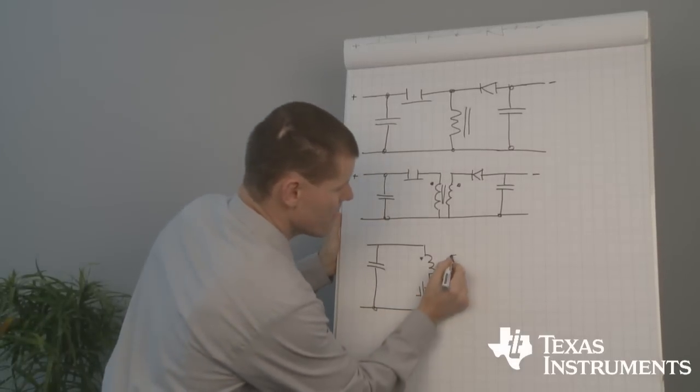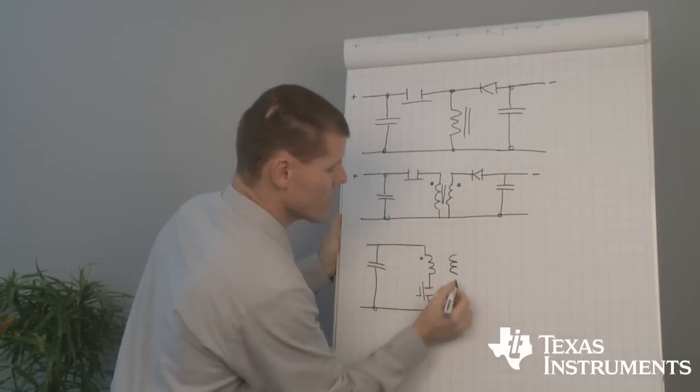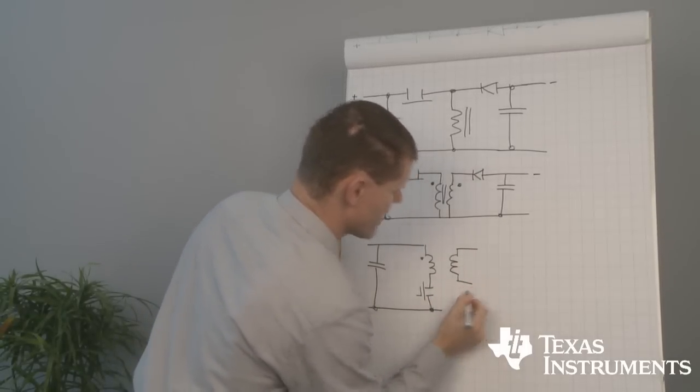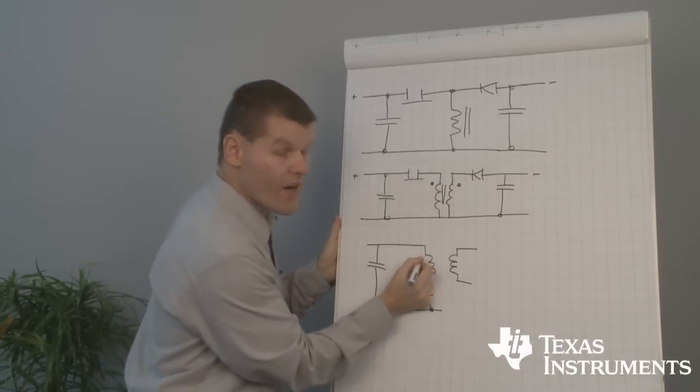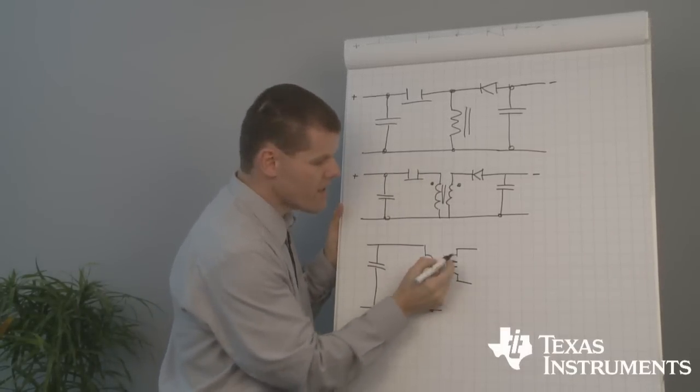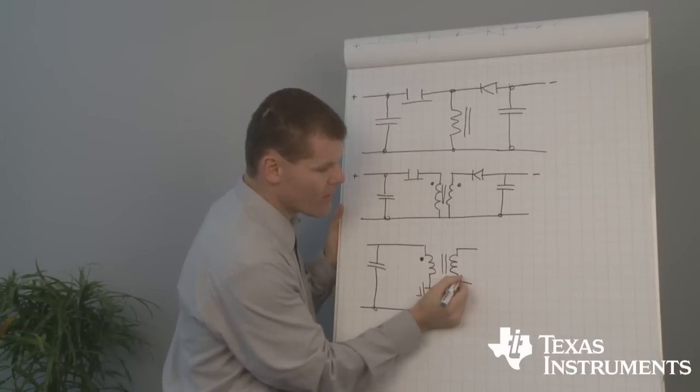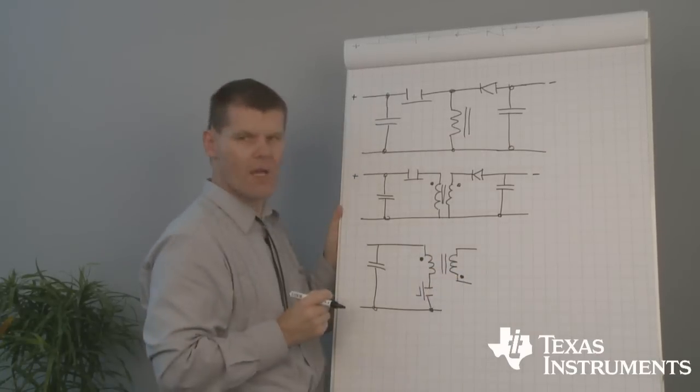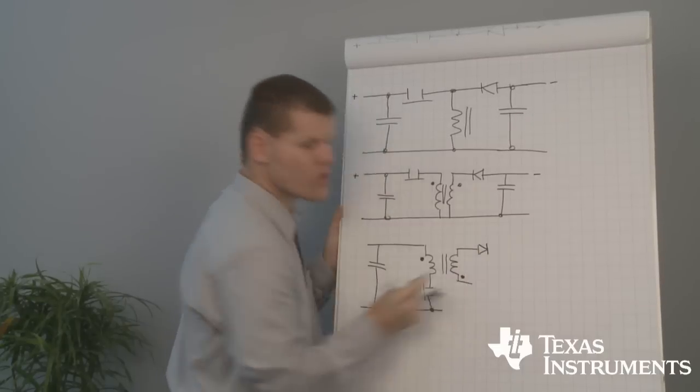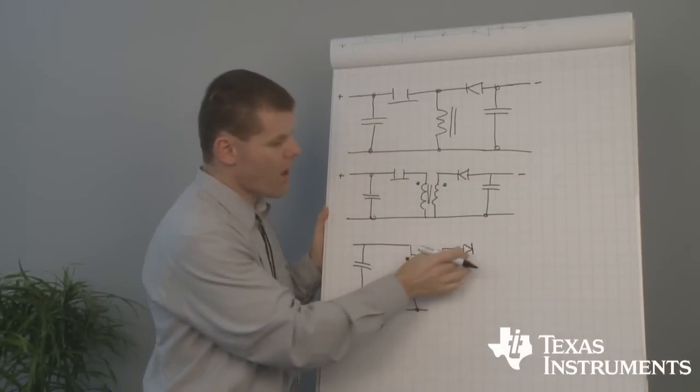And what can we do at the secondary side? At the very first step we change the windings direction of our transformer and we change the direction of our diode.